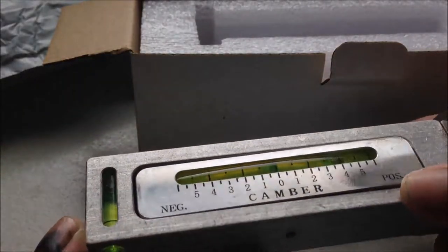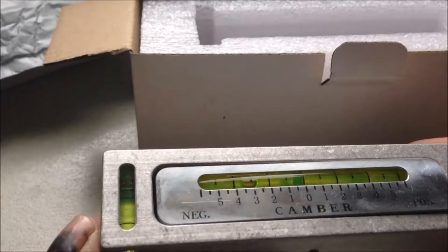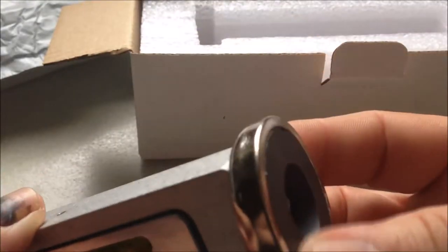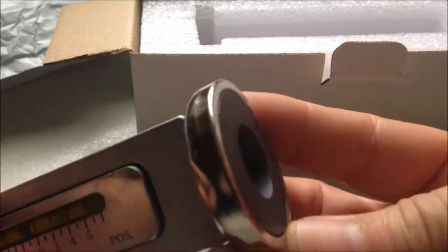This side is positive, this side is negative. And this end is a magnet so you can stick it to your rotor, like a disc, and then you can measure the camber there.